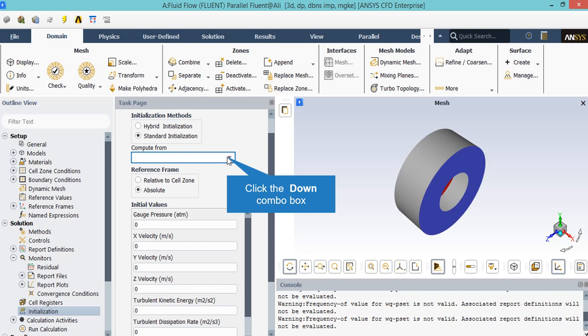In the standard method, you will be able to choose and set the value for different parameters of the flow field based on your idea, or actually you can choose from the compute from drop-down list.